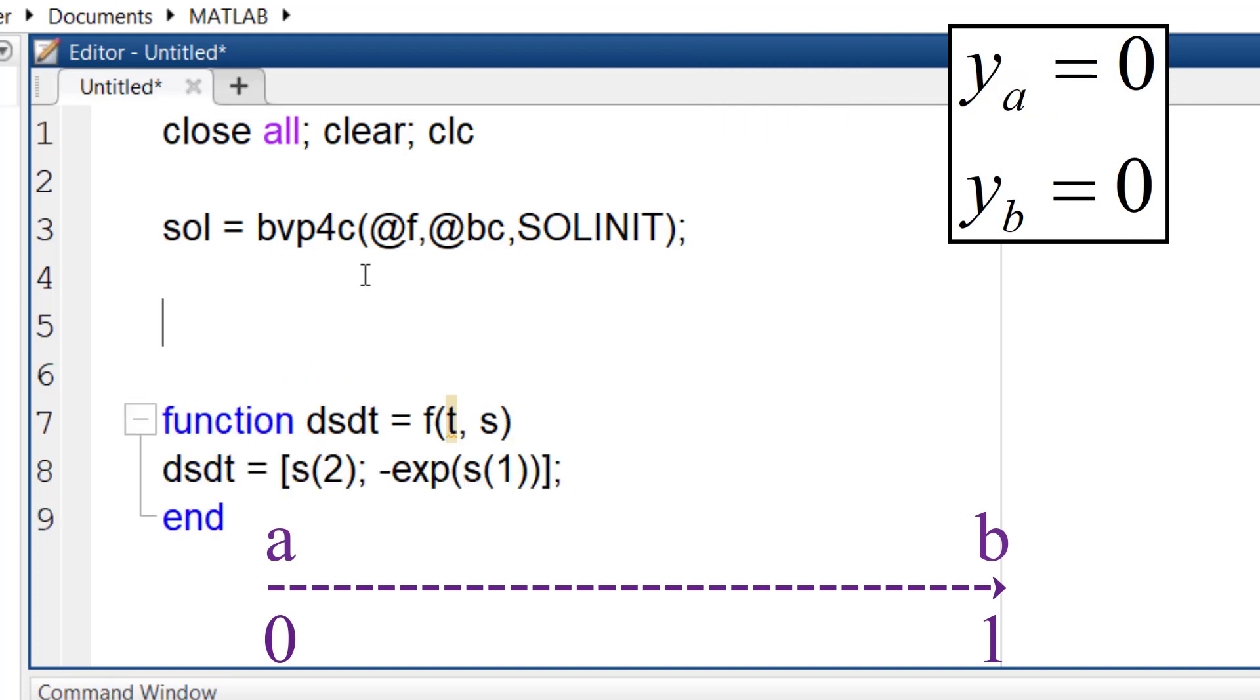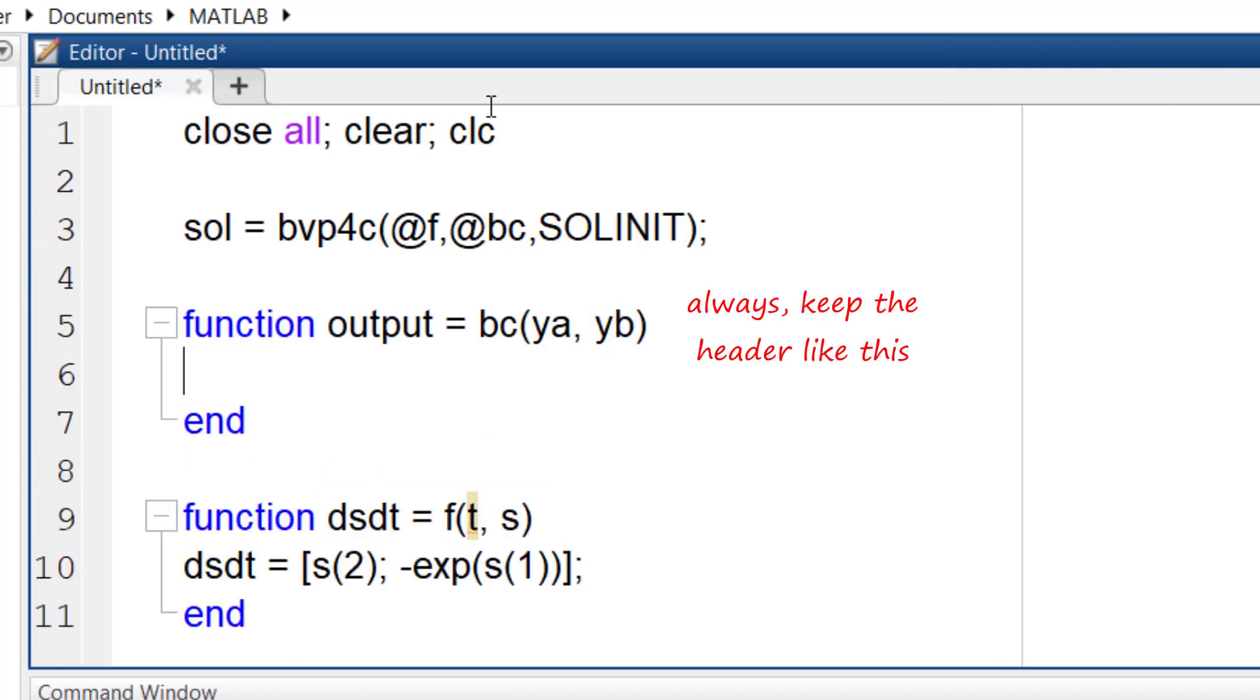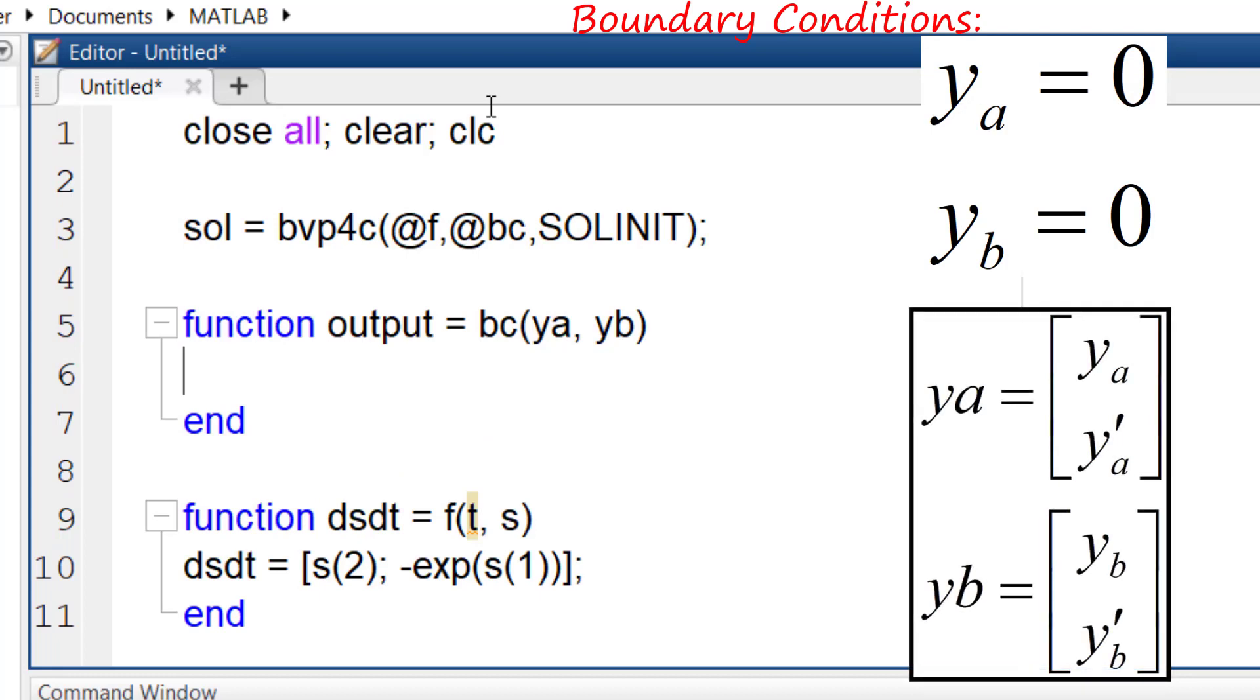I write a header for my bc function. It is the standard form and I advise you to keep it like this. ya is a vector which contains y and y prime values at a. yb is a vector containing y and y prime at b.